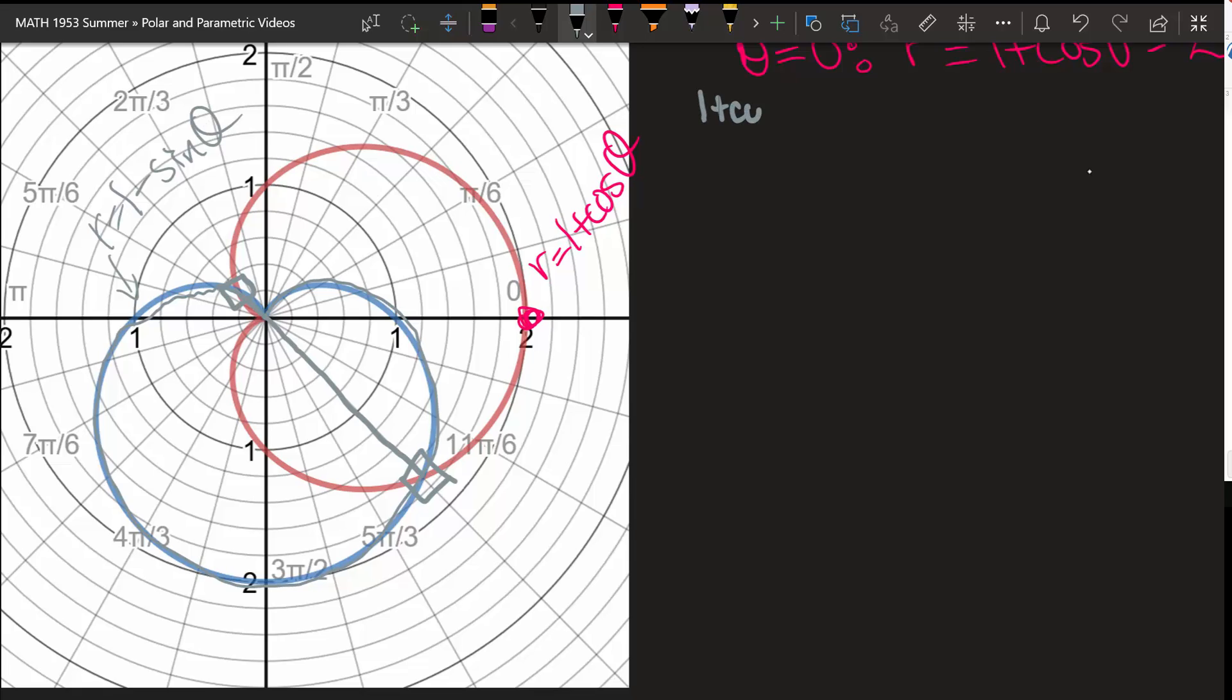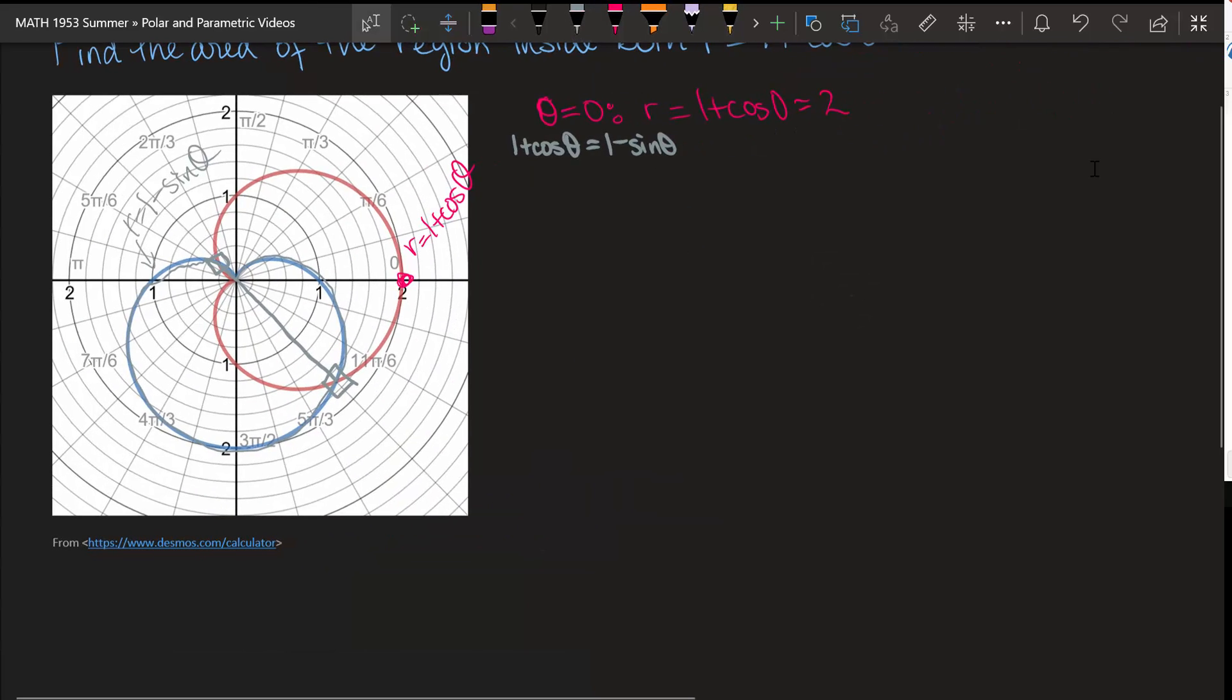When does 1 plus the cosine of theta equal 1 minus the sine of theta? Well that's going to occur when, by subtracting 1 from each side, we get that the cosine of theta is the opposite of the sine of theta.